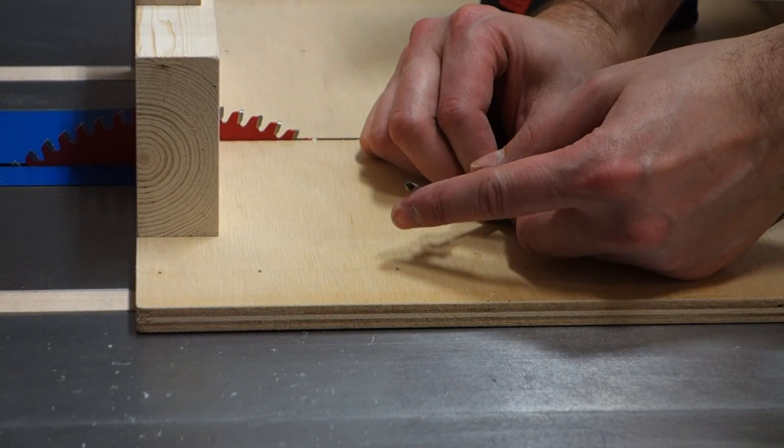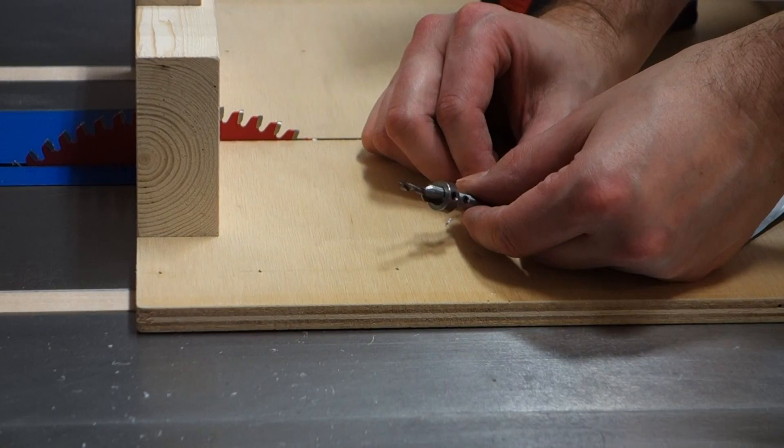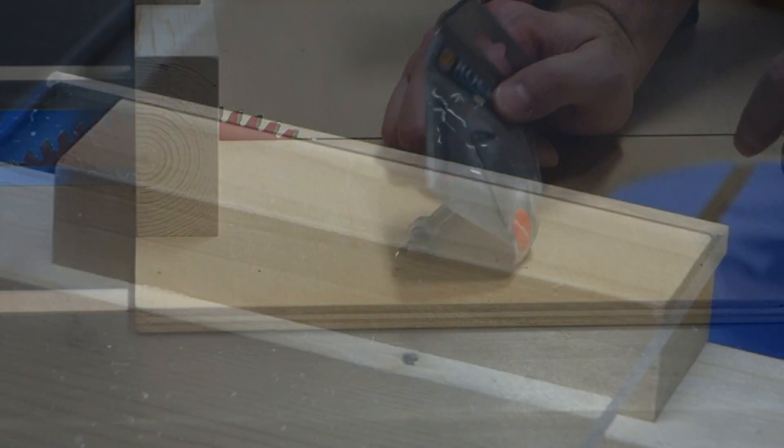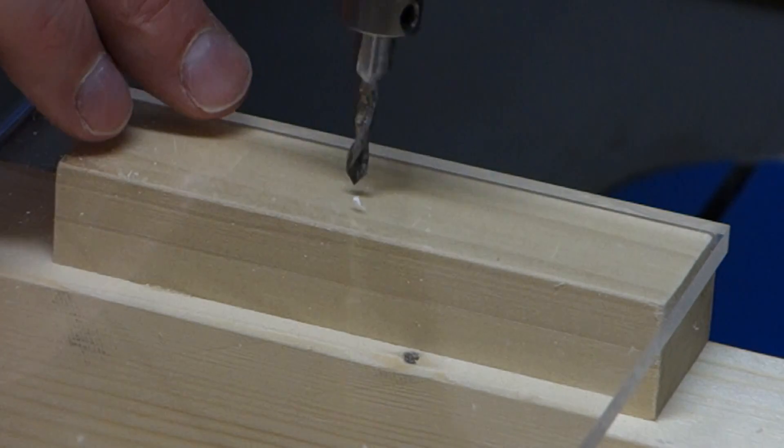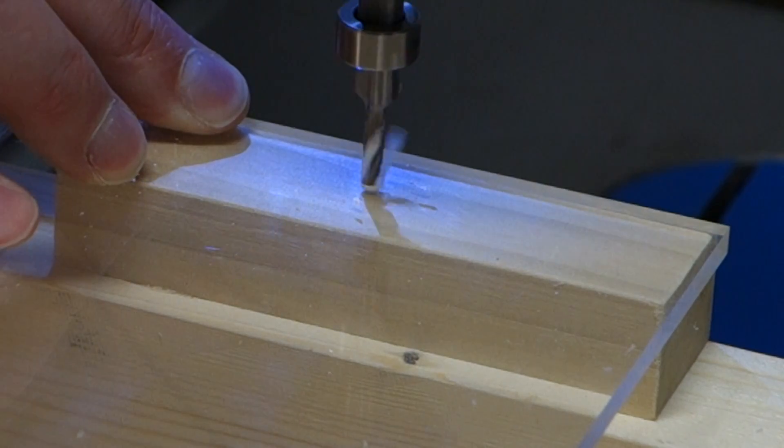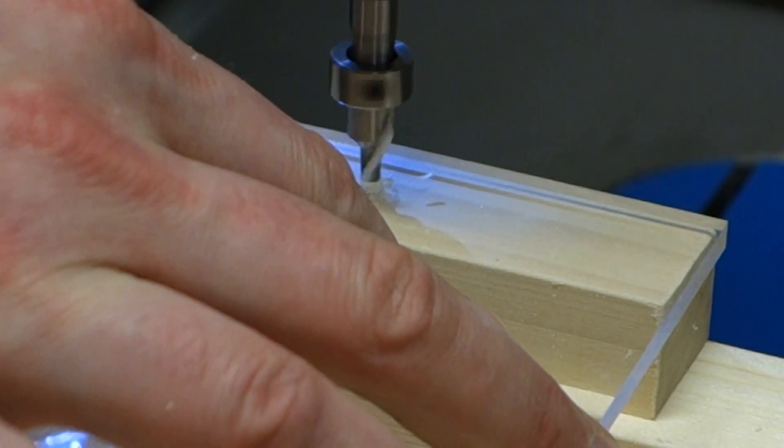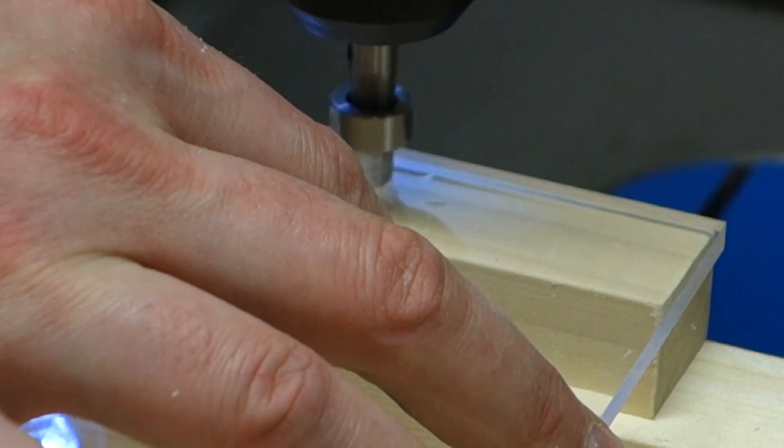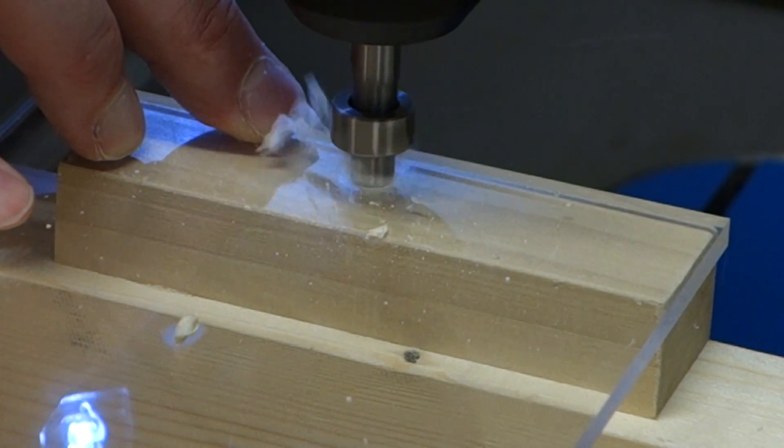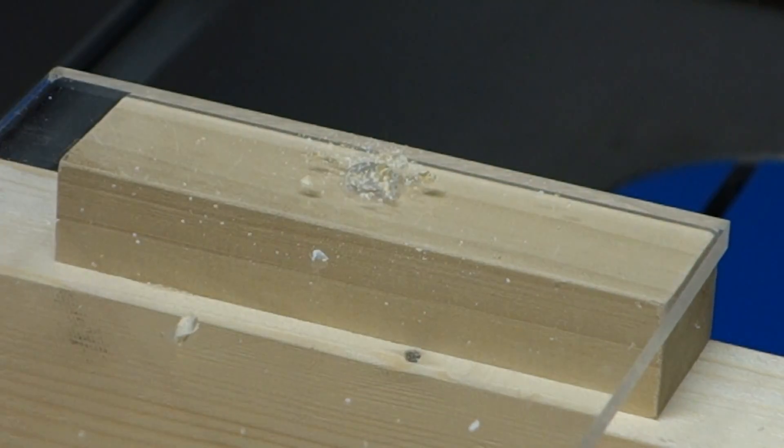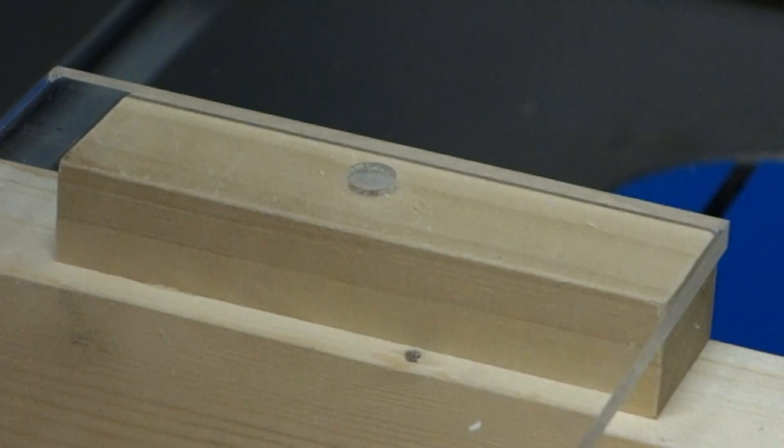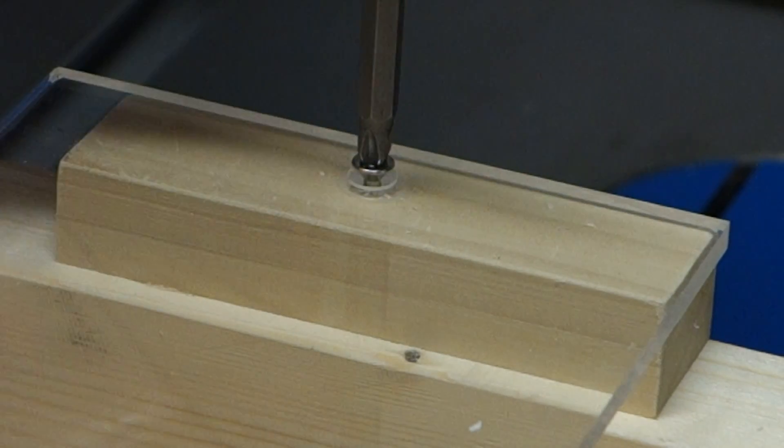Anyways, this is a phenolic countersinking bit. This bit has a 90-degree point. I don't know if you can see that or not in the camera, but it really allows you to go through plastic without chipping much. It's all high-speed steel. This one was picked up in hole number two. Alright, it's done, nice clean holes.